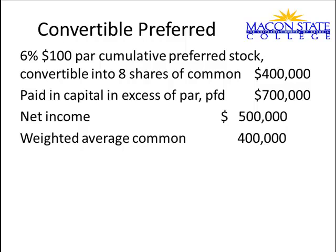Now let's look at convertible preferred shares. We have a 6% $100 par convertible preferred stock that's cumulative, and you can convert each share into 8 shares of common. The par account can only hold par value — anything above par goes into paid-in capital in excess of par, which is $700,000. So the $400,000 par account divided by the $100 par gives 4,000 preferred shares issued. Here's the net income and weighted average common — freeze the frame and try it or watch me work it out.